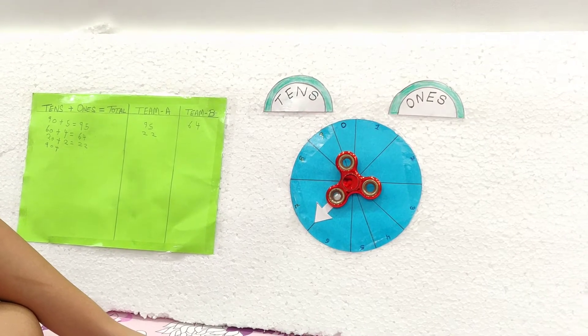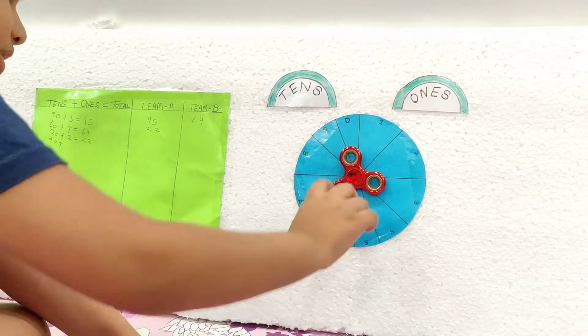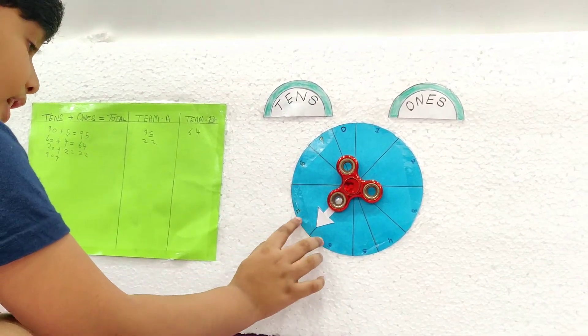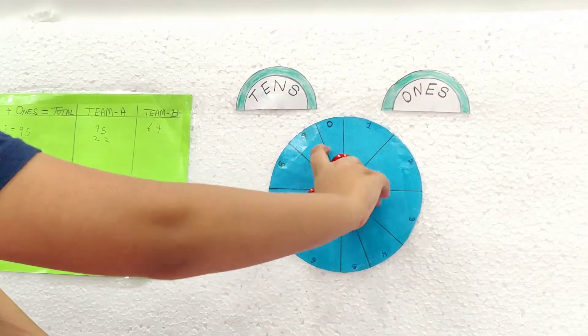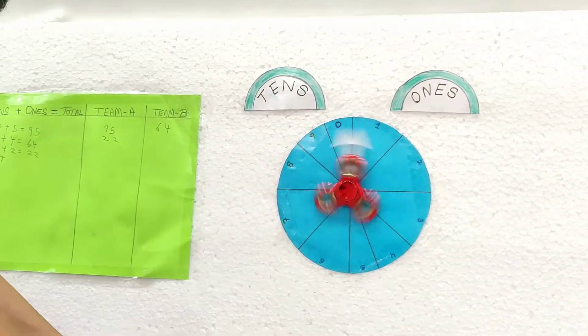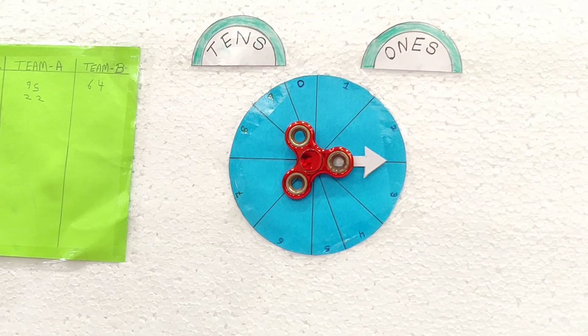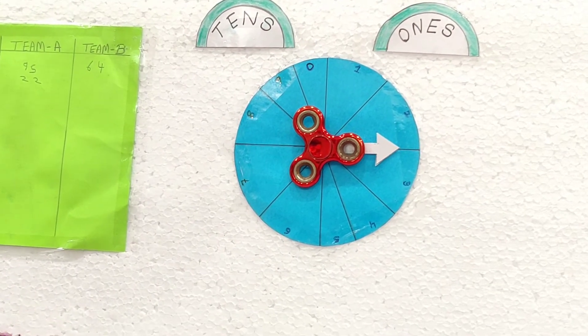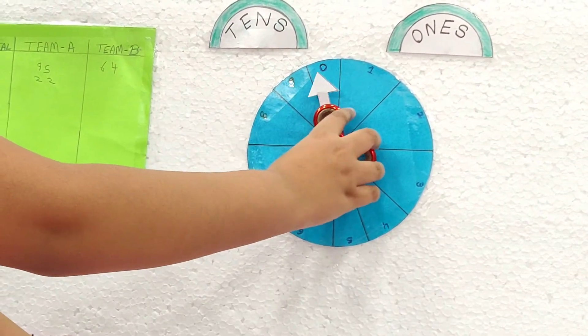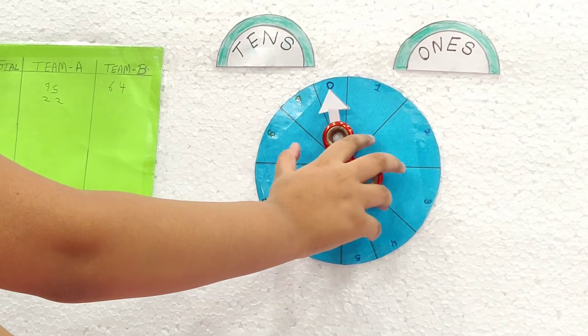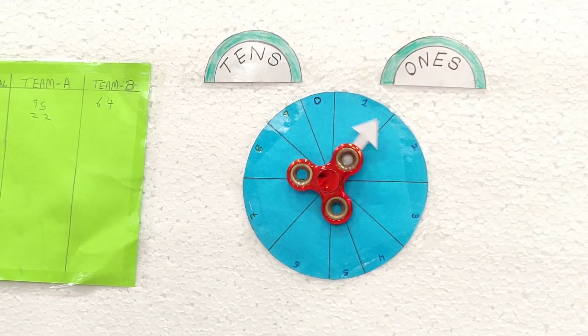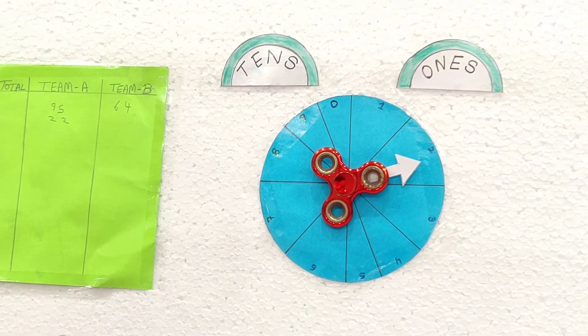We have to spin the wheel again I think so because it's between 7 and 6. Let us spin it again. Again it is between. Let us spin it again.